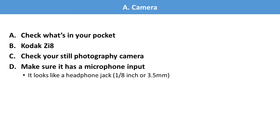As far as cameras go, let's start with checking what's in your pocket. Most people have a smartphone these days capable of creating relatively high-caliber video with an incredible image — the problem is with audio, which we'll get to. For nonprofits, if you want a dedicated camera, I recommend the Kodak ZI8. This camera is no longer being made, but you can find them on Amazon or eBay for relatively cheap. I like them for the replaceable battery and replaceable media — you can swap out the SD card when it fills up, so you can film two hours or more without worrying about running out of space.